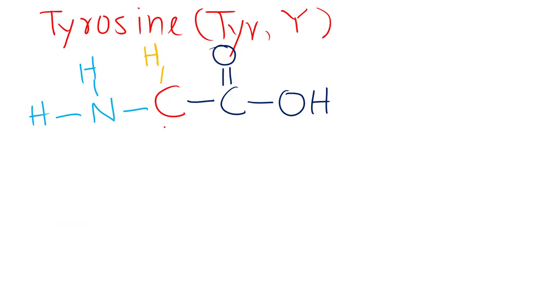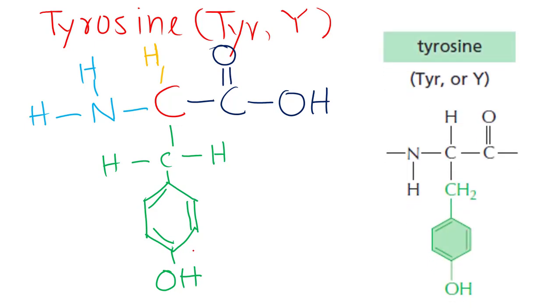Now the R is simple CH2 and a benzene ring. Since it is an aromatic, we have an OH group attached. So this is the structure of tyrosine, an aromatic hydrocarbon.